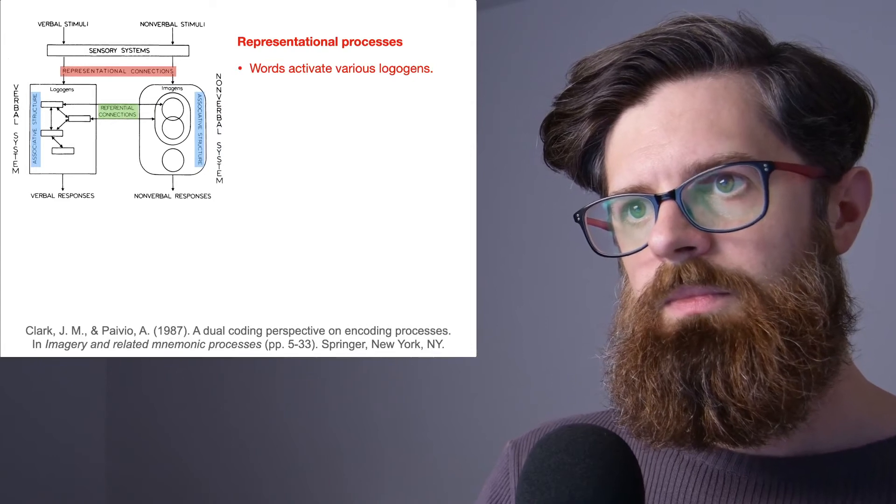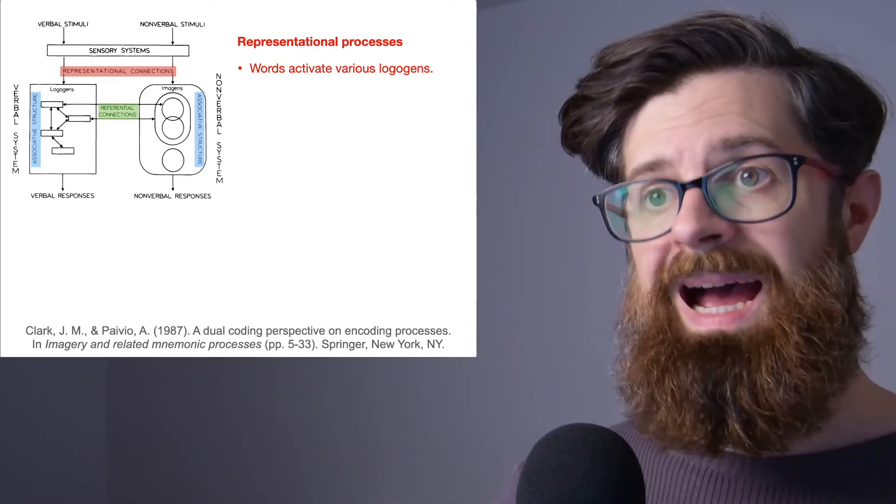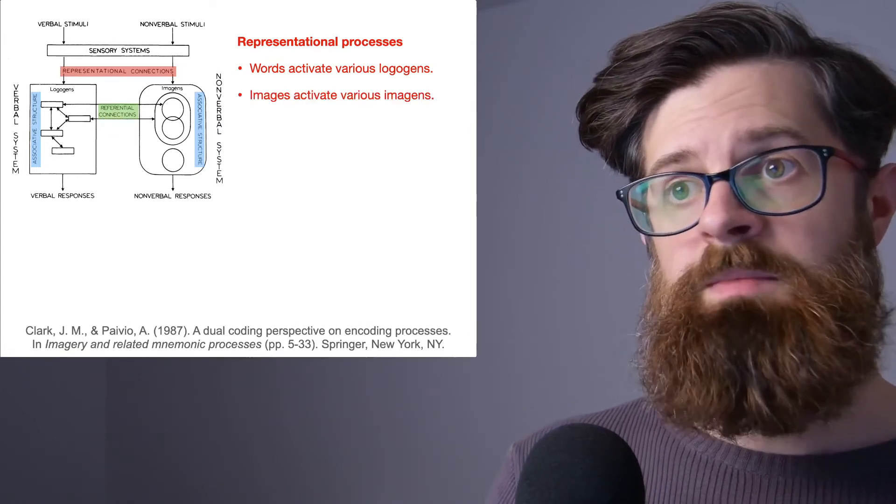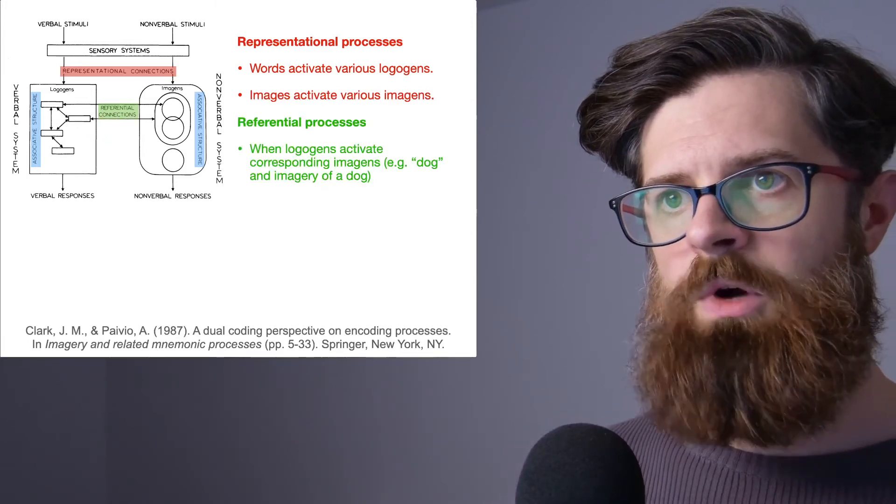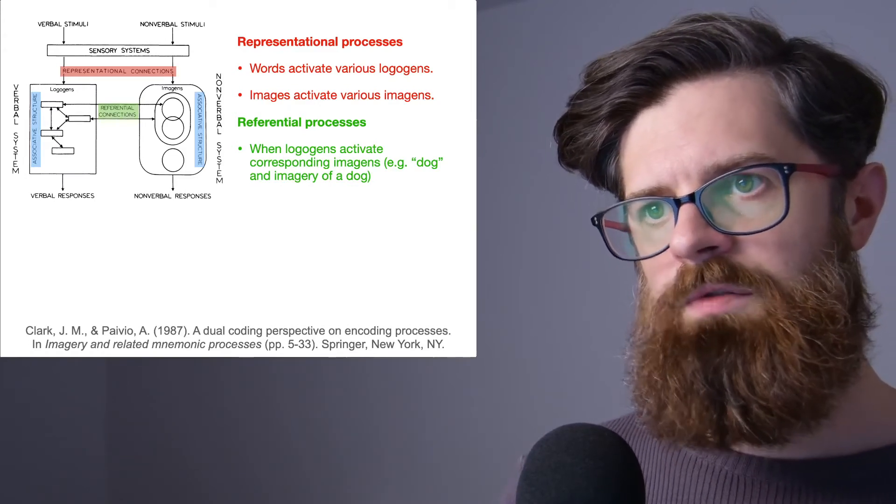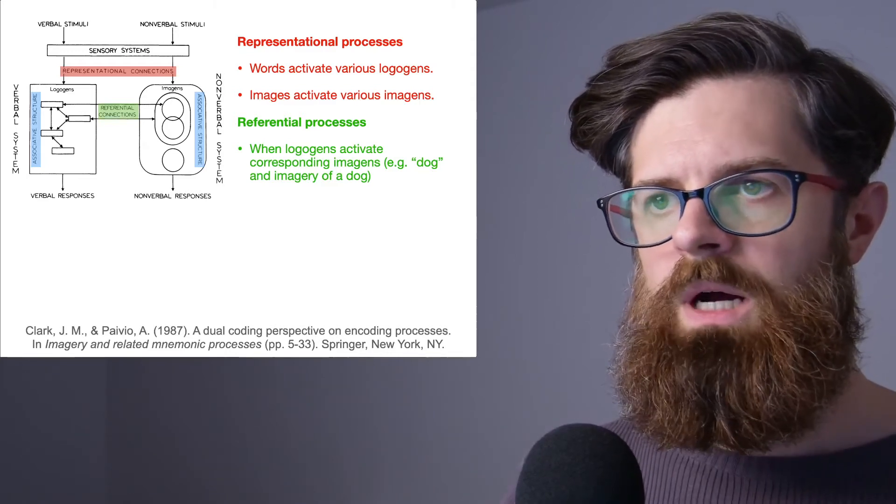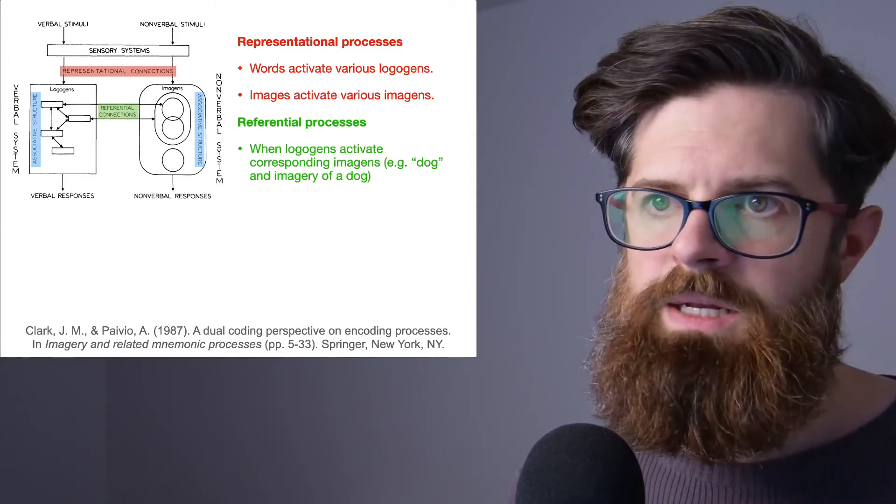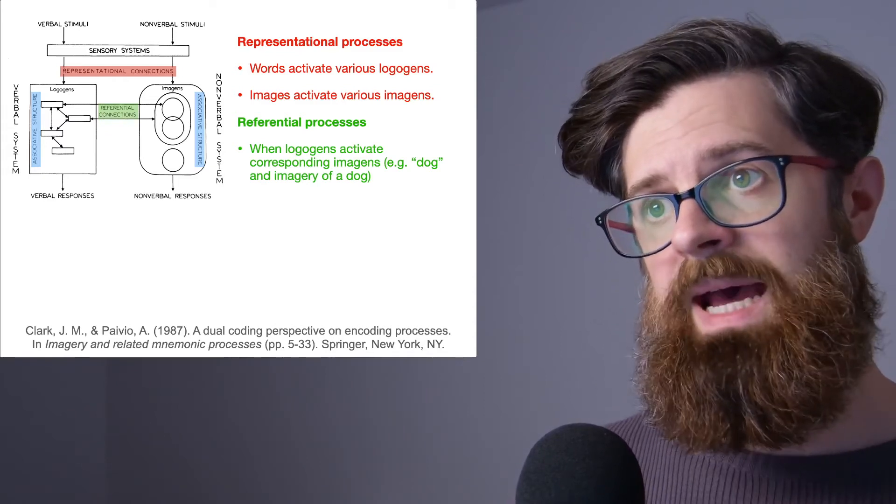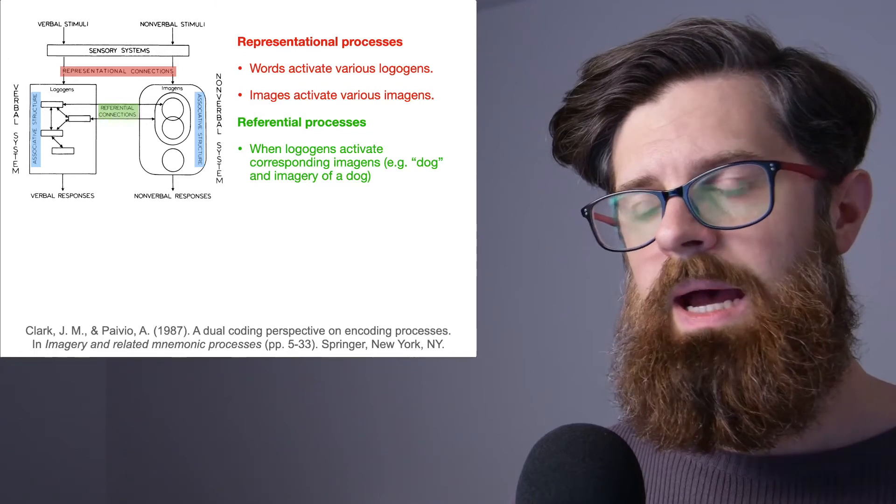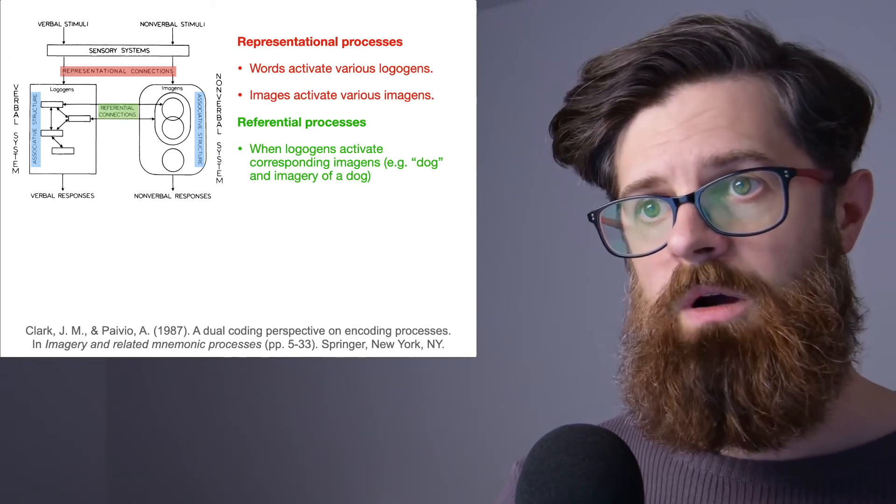So this slide essentially summarizes what I've said. Words might activate various logogens. Images might activate various imagens. The referential processes are a way of communication between the verbal and the non-verbal system. So like I've said in other examples, if I look at the word 'dog,' maybe this activates logogens and then via some representational processes this might activate some imagery of a dog.